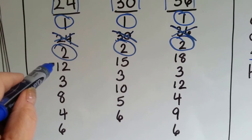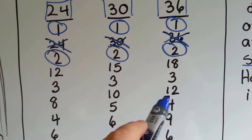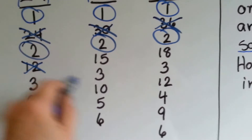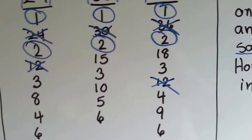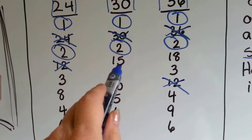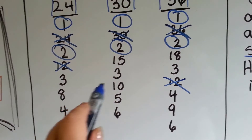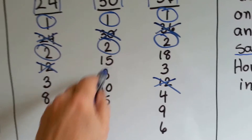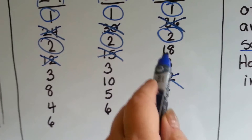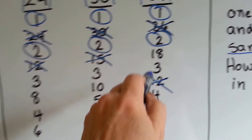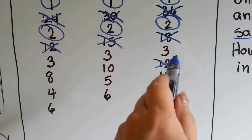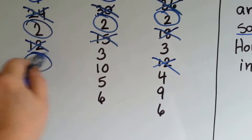Do they all have a 12? Well, 36 has a 12 but 30 doesn't, so it can't get in — it's not a common factor; it has to be shared by all 3. Do they all have a 15? No, only 30 has a 15. How about 18? Not allowed. But they all have 3, don't they? So 3 is allowed in.